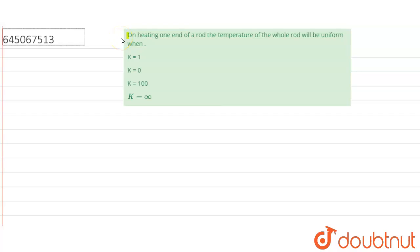Hello everyone. On heating one end of a rod, the temperature of the whole rod will be uniform when: k is 1, k is 0, k is 100, or k is infinity.